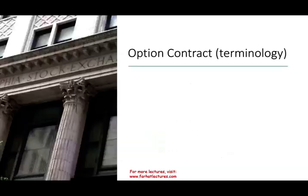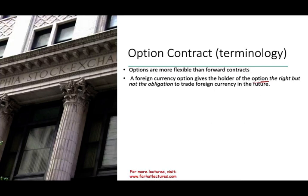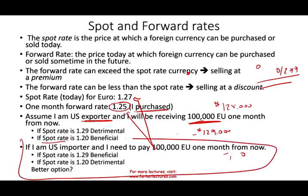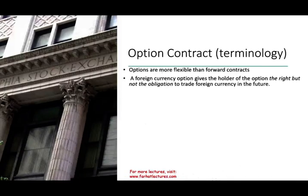Is there a better option? Yes — there is an option contract, which is similar but more flexible than the forward contract. Options are more flexible because a foreign currency option gives the holder the option but not the obligation to trade the foreign currency in the future. For example, if you are a US importer with an option to buy at $1.25 but the price is $1.20, you would let your option expire and buy it at $1.20. With a forward contract you are obligated to buy at $1.25. However, you have to pay a price — a premium — for that option.